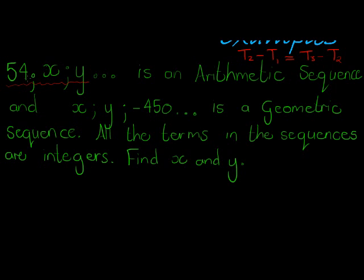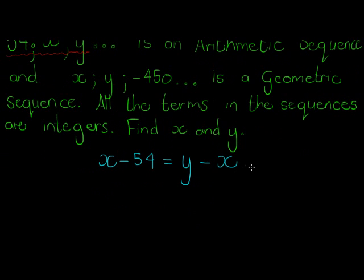I don't want a and d, we want x and y. So if I wanted a and d I could have used my general term, but I actually want unknown terms which means I can use this. So I've got x minus 54 gives me the same answer as term 3 which is y minus x.